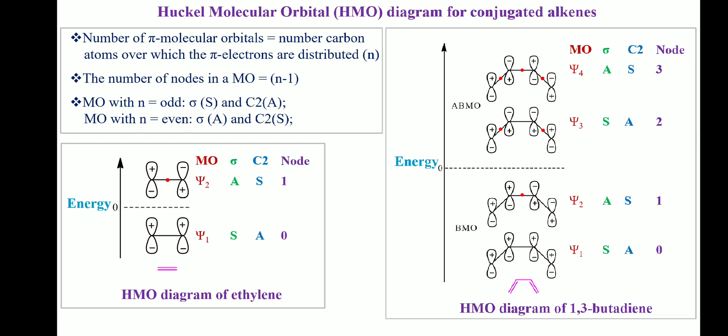In the case of 1,3-butadiene, there are four carbon atoms over which the pi electrons are distributed, so the number of pi molecular orbitals will be four. psi1 and psi2 below the dashed line are bonding, while psi3 and psi4 above the dashed line are anti-bonding. psi1 and psi3 with n equal to odd have a plane of symmetry, while psi2 and psi4 with n equal to even have a C2 axis of symmetry. According to the n−1 rule, psi1, psi2, psi3, and psi4 have 0, 1, 2, and 3 nodes respectively.